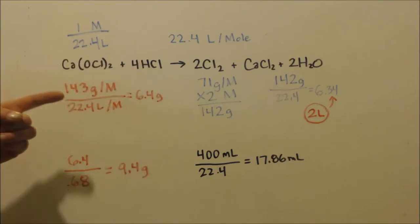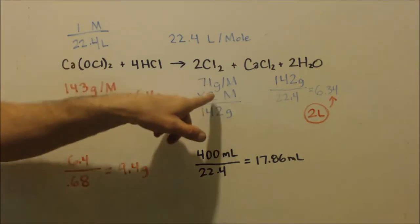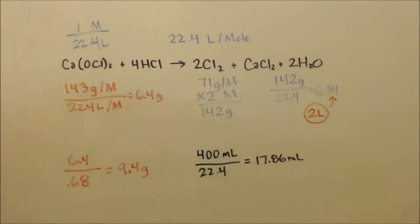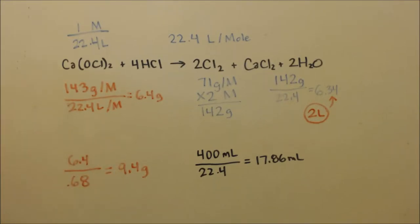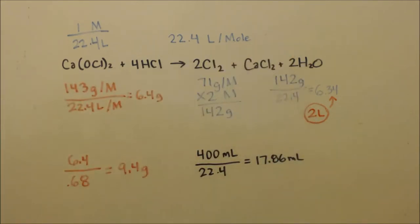So if I drip 18 milliliters of hydrochloric acid onto 9.4 grams of my shock, which is this much calcium hypochlorite, I will get 2 moles of Cl2. One mole is 71 grams, so 2 moles is 142 grams. I divided everything by 22.4, so I get 6.34 grams. And if 1/22.4 of a mole was a liter, then I got 2 moles here. So I'm going to make 2 liters of gas.